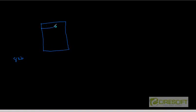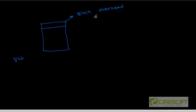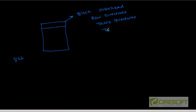Some space is stored here called block overhead. In this area we are going to store something called row directories, table directories, and then transaction directories.